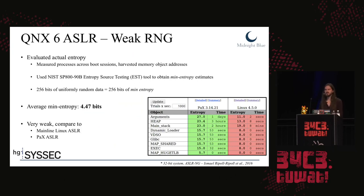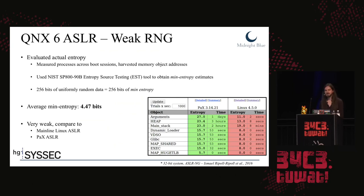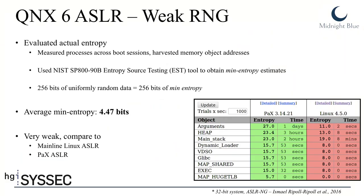We measured various kinds of processes across different boot sessions and harvested memory object addresses, then used the NIST entropy source testing tool to obtain a min-entropy estimate. For reference, 256 bits of uniformly random data should correspond to 256 bits of min-entropy. We found that the average min-entropy of an address on QNX 6 was only 4.47 bits, with the lowest being 3 bits for shared libraries and the highest 6 bits for the stack. This is very weak compared to other 32-bit operating systems — mainline Linux, for example, varies between 6 and even 27 bits of min-entropy.